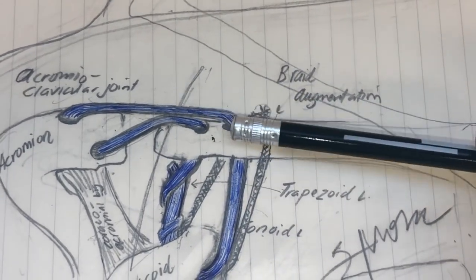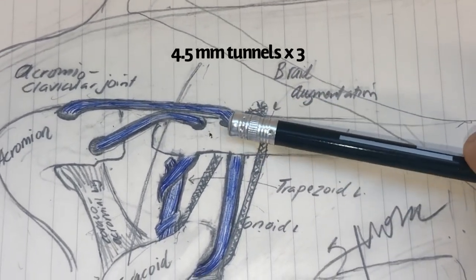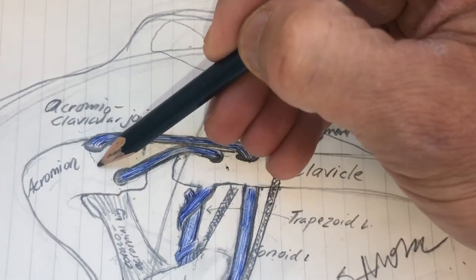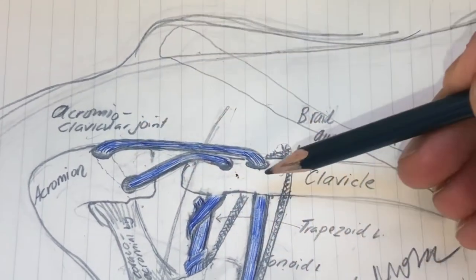Now before I actually do the braid, I've already drilled my conoid tunnel, trapezoid tunnel, and the acromial tunnel. So this one is sort of on a somewhat oblique like this. These are through and through.